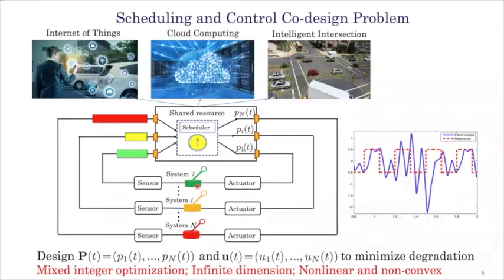This is the general structure of the co-design problem. We consider a total number of n systems which have recurring requests to use a shared resource to complete certain control tasks. In the shared resource, we assume there is a scheduler that assigns priorities to resolve contention, and the priority takes integer values and can be time varying. The overall goal is to determine priority assignment P and control u at the same time, such that overall control performance degradation caused by contention can be minimized. This problem turns out to be very difficult because it is a mixed integer optimization that is nonlinear, non-convex, and has infinite dimension search space.